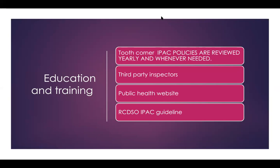Regarding the biological indicators — the control is the one labeled C. It has to be cracked and placed into the device — the one that has not been into the sterilizer. The one that has been in the sterilizer is placed alongside the control.